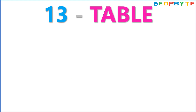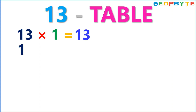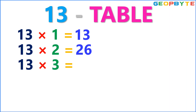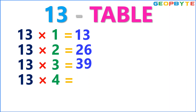Now, let us see the 13 table. 13 ones are 13. 13 twos are 26. 13 threes are 39. 13 fours are 52.